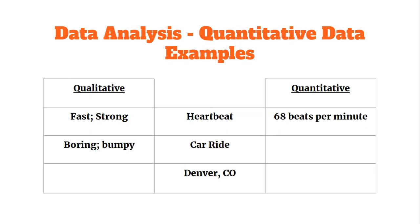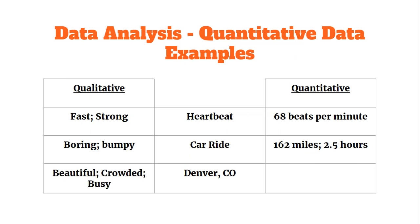Now think of quantitative values. A numerical description of a car ride might be that you traveled 162 miles or it took two and a half hours — those are quantities we could record. For Denver, qualitative observations might be that it's beautiful, crowded, or busy — things we'd pick up on with our five senses but difficult to put numbers to. Quantitative data about Denver might be that it's 5,280 feet above sea level or that there are close to 620,000 residents.